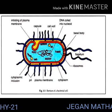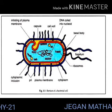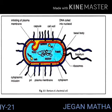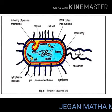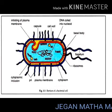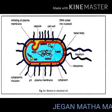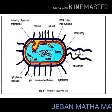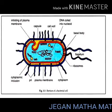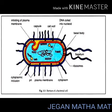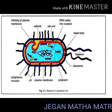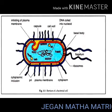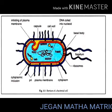Mesosomes are localized infoldings of the plasma membrane produced into the cell in the form of vesicles, tubules, and lamellae. They are clumped and folded together to maximize their surface area and help in respiration and binary fission.